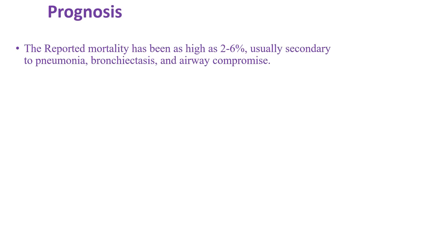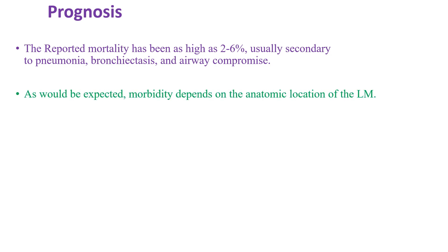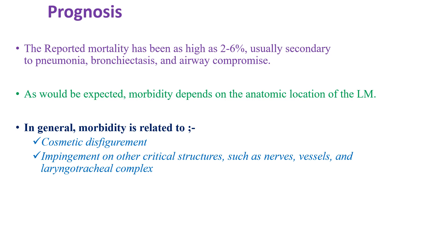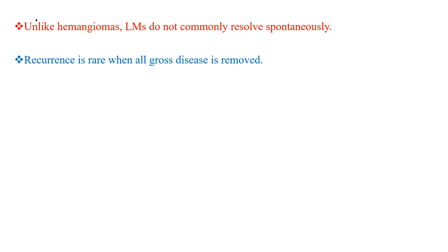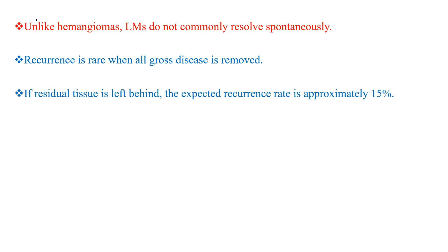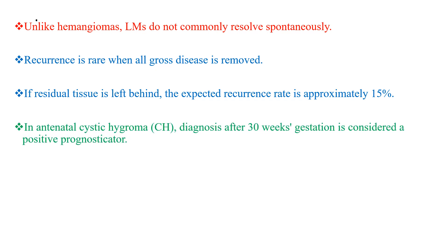The reported mortality has been as high as 2–6%, usually secondary to pneumonia, bronchitis, or airway compromise. Morbidity depends on anatomical location and is related to cosmetic disfigurement after surgical intervention and impingement on critical structures such as nerves, vessels, and the laryngotracheal complex. Unlike hemangiomas, cystic hygroma does not commonly resolve spontaneously. Recurrence is rare when all gross disease is removed, but if residual tissue is left behind, the expected recurrence rate is approximately 50%. In antenatal cystic hygroma, diagnosis after 30 weeks of gestation is a positive prognostic sign, whereas diagnosis before 30 weeks is a poor prognostic sign.